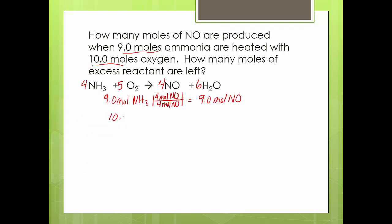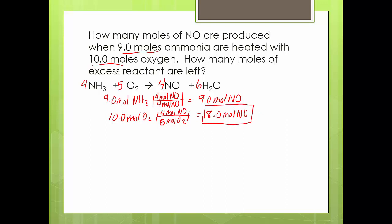Now using the 10 moles of oxygen — if I had all the ammonia I needed, it's a 4-to-5 ratio, so the 10 and 5 work out to give me only 8 moles of nitrogen monoxide. Don't fall into the habit of saying '9 is less than 10 therefore ammonia runs out' — that only works if it's one-to-one. Don't try to guess it. Do the math. So 8 moles is my answer — that's my amount of product. What is my limiting reactant? The limiting reactant is oxygen.